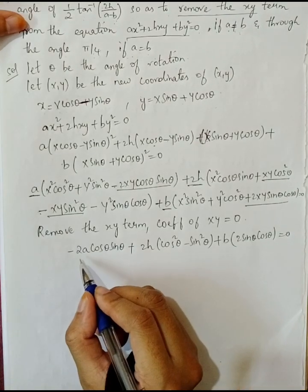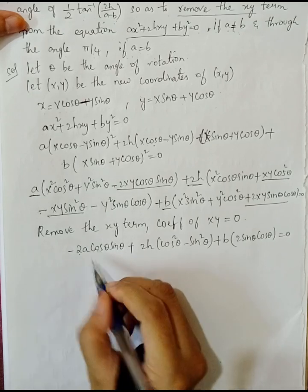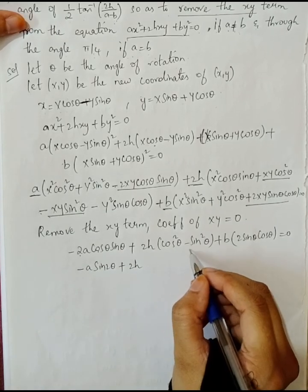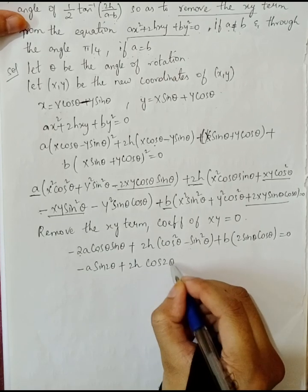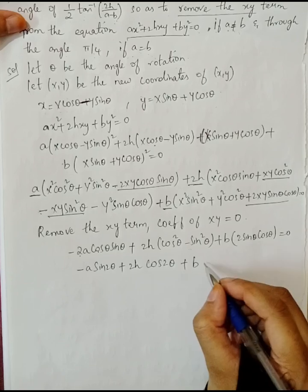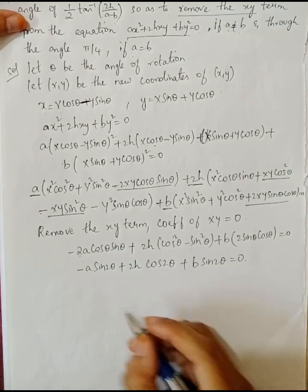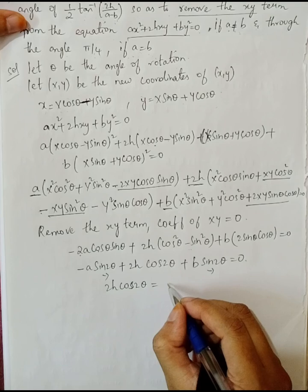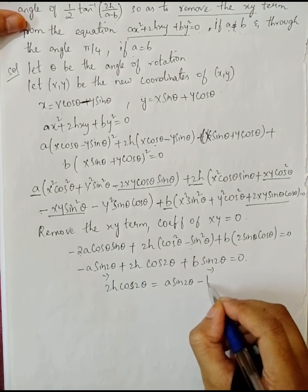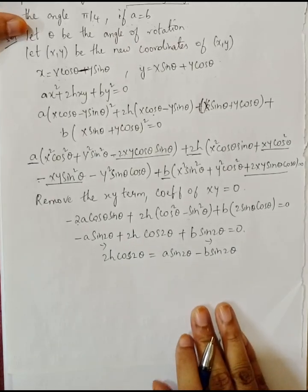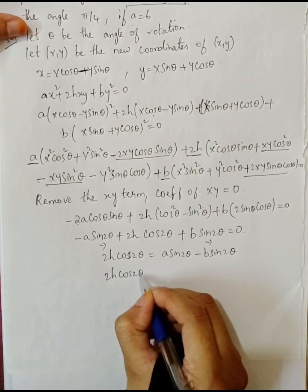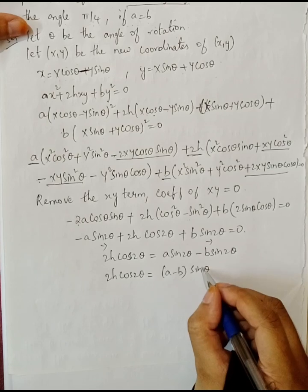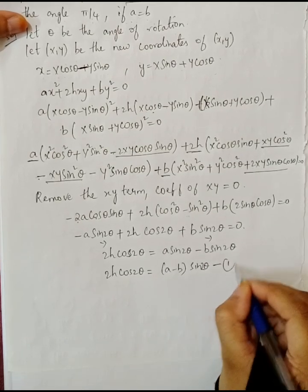Applying the double angle formulas — 2 sin theta cos theta equals sin 2theta, and cos squared theta minus sin squared theta equals cos 2theta — we get: minus a sin 2theta plus 2h cos 2theta plus b sin 2theta equals 0. Transferring terms: 2h cos 2theta equals a sin 2theta minus b sin 2theta. Taking sin 2theta common: 2h cos 2theta equals (a minus b) sin 2theta. Call this equation 1.